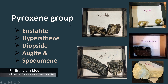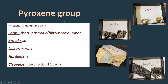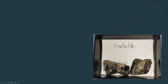Hi there, today we are going to learn the pyroxene group, which includes enstatite, hypersthene, diopside, augite, and spodumene. Pyroxene can be identified by its short prismatic, fibrous, or columnar form, its white streak, vitreous lustre, six hardness, and two-directional cleavage with an angle of almost 90 degrees. Now let's study each of the pyroxene minerals.